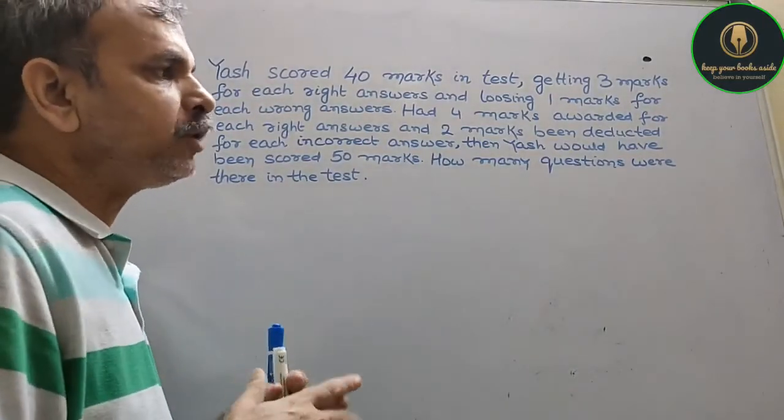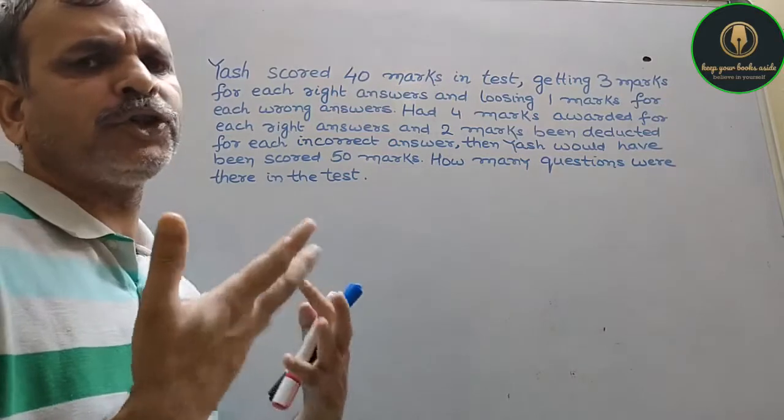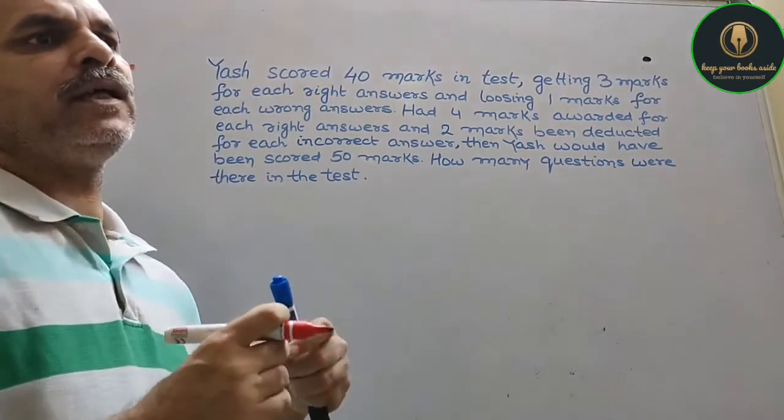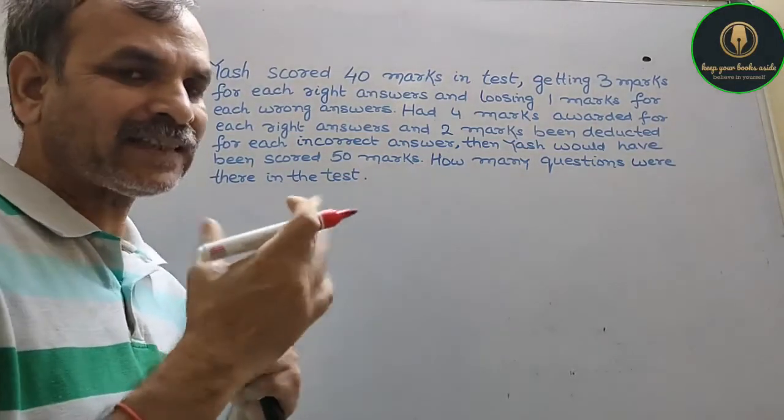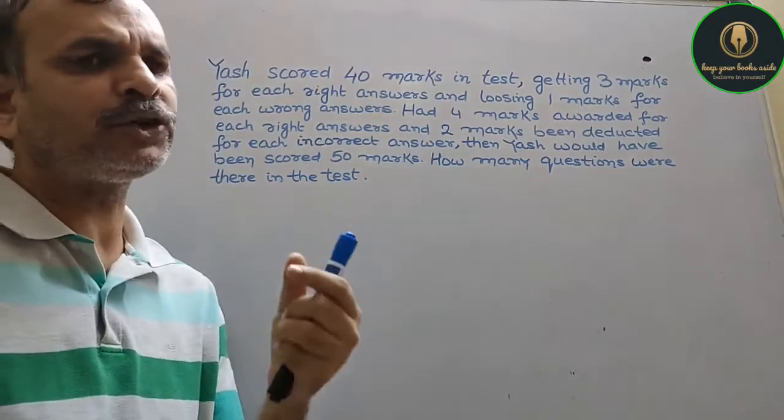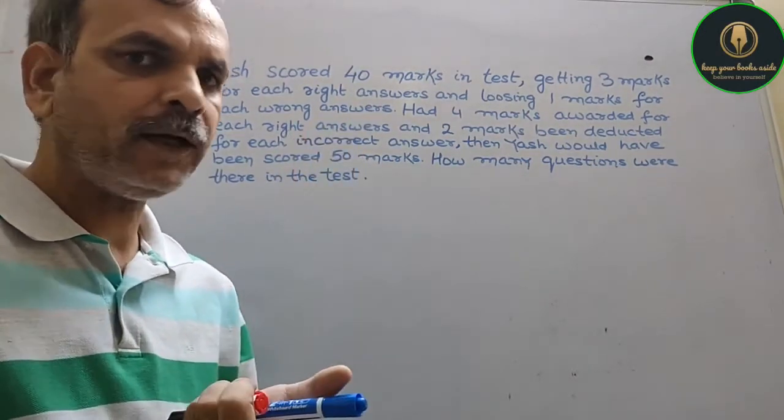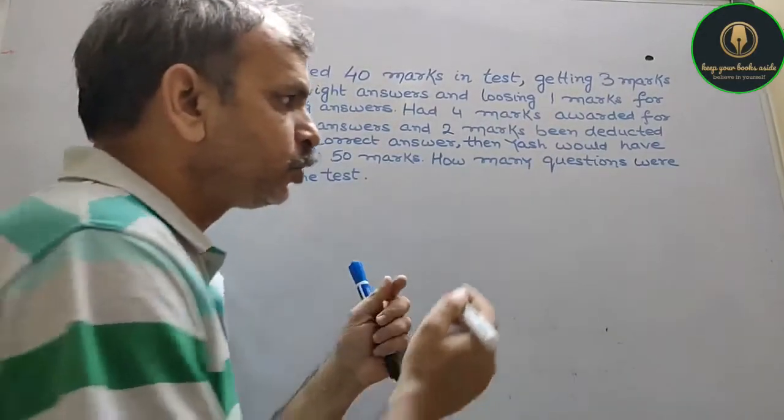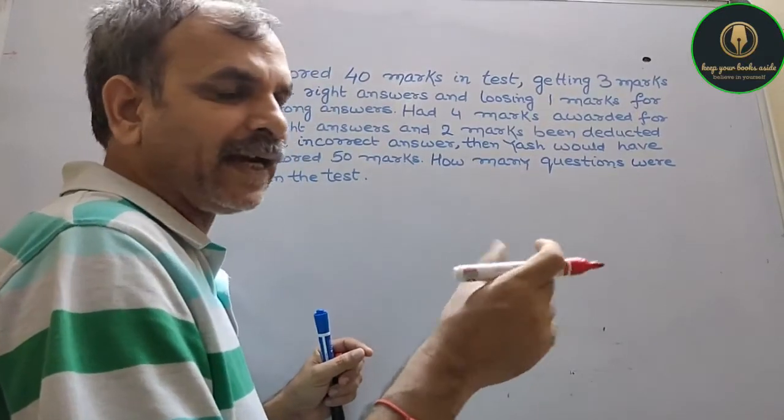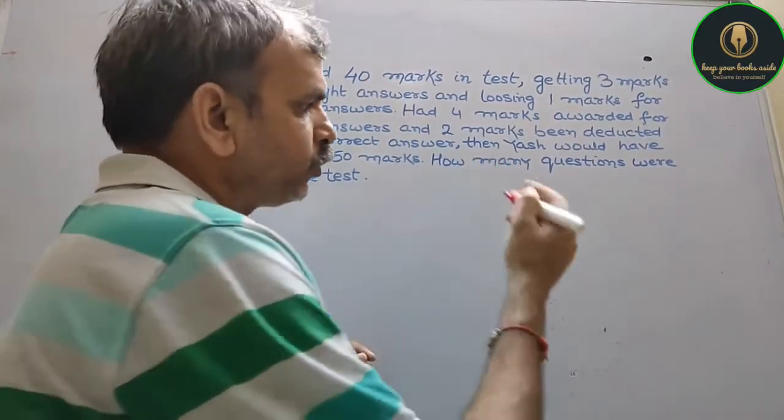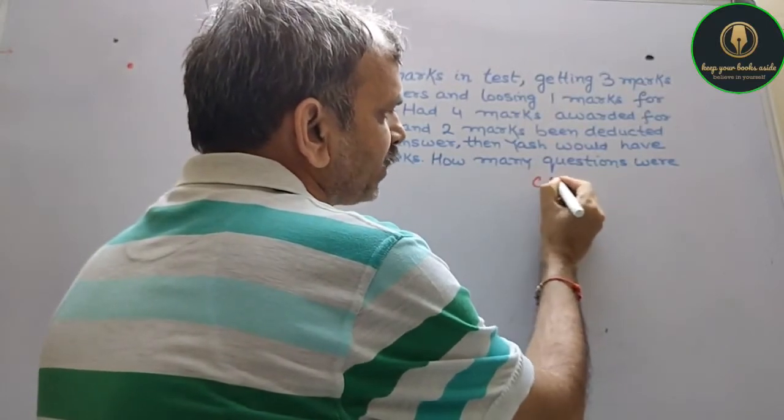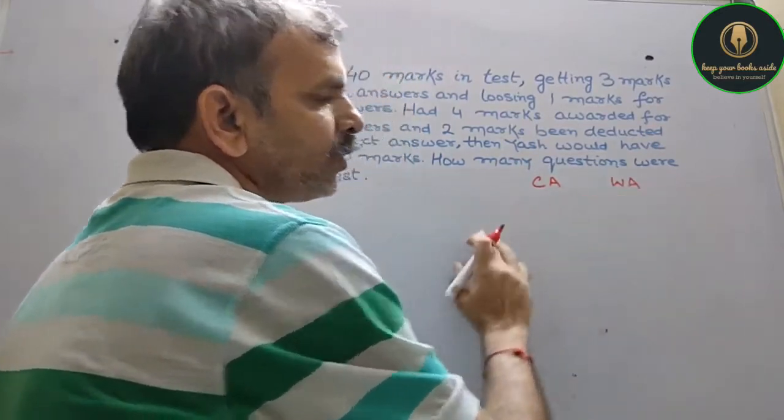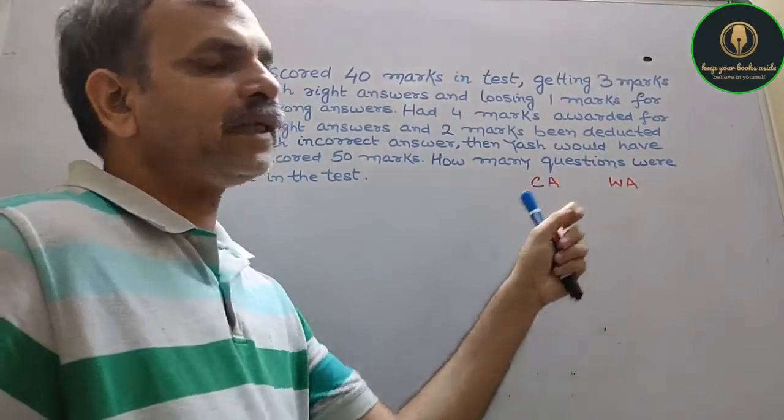Okay, now, suppose the total questions is - in that, you have X questions correct and Y questions wrong. There are correct questions and wrong answers both. So we can go for correct answers and wrong answers.